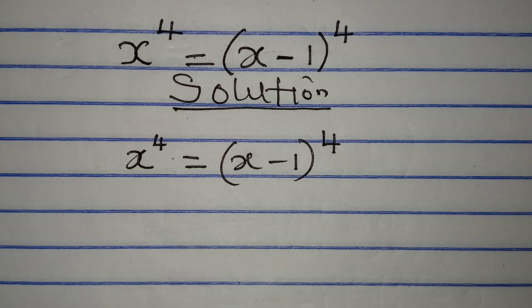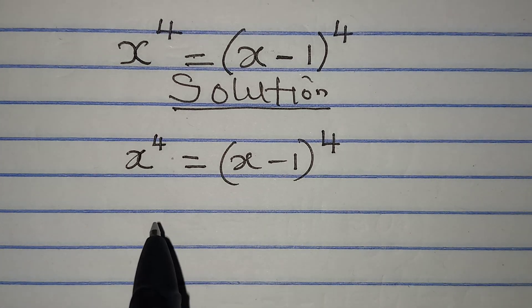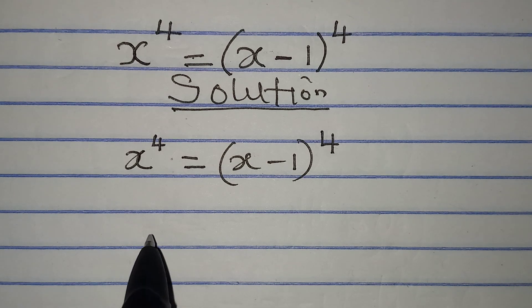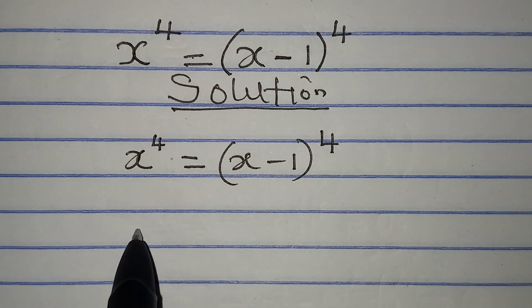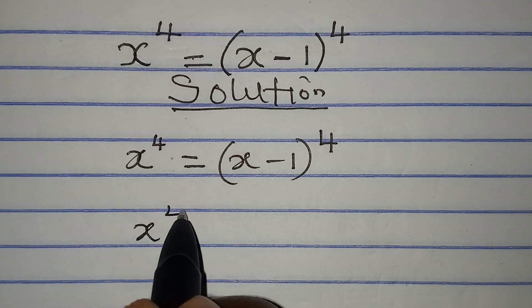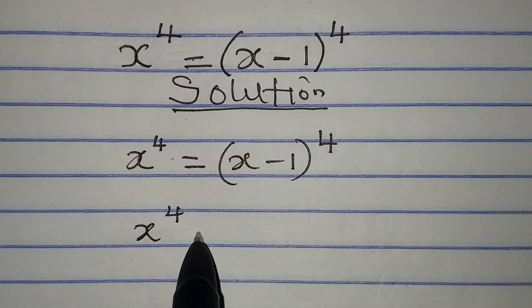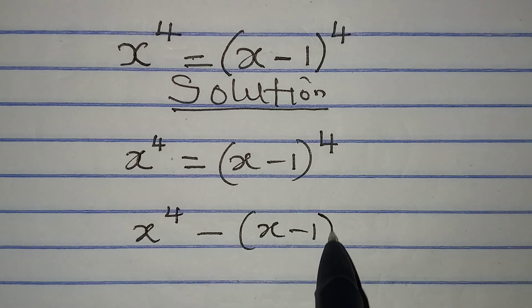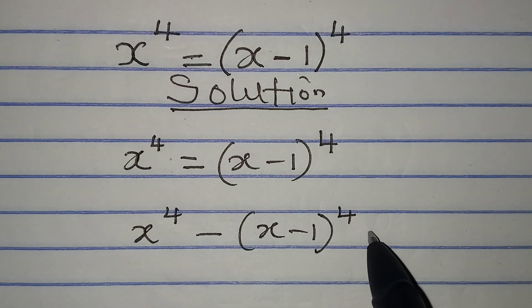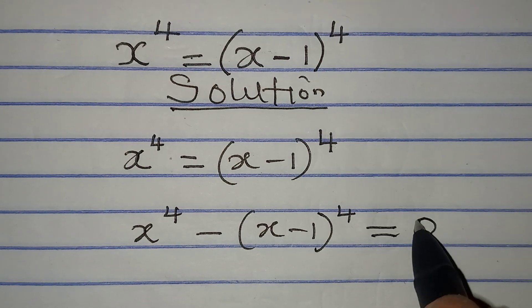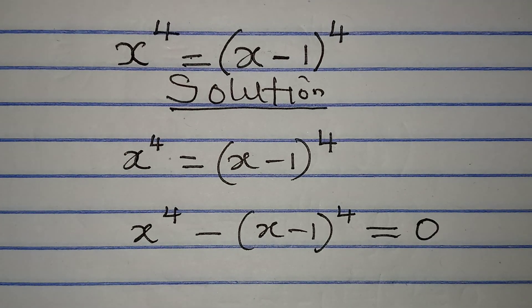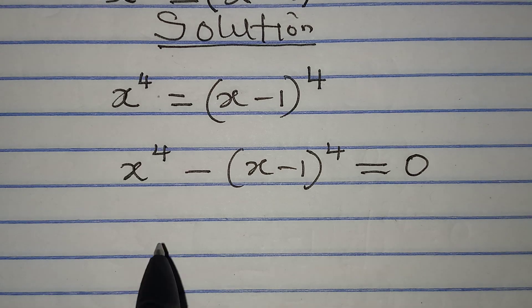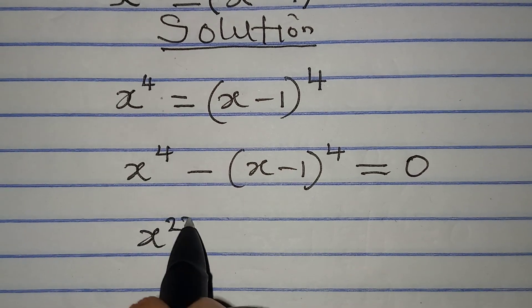Now, what I will do is bring everything to the left, so I have x to the power of 4 minus (x minus 1) to the power of 4, and this will equal 0. I want to split this so I have x squared, squared minus (x minus 1) squared, squared.